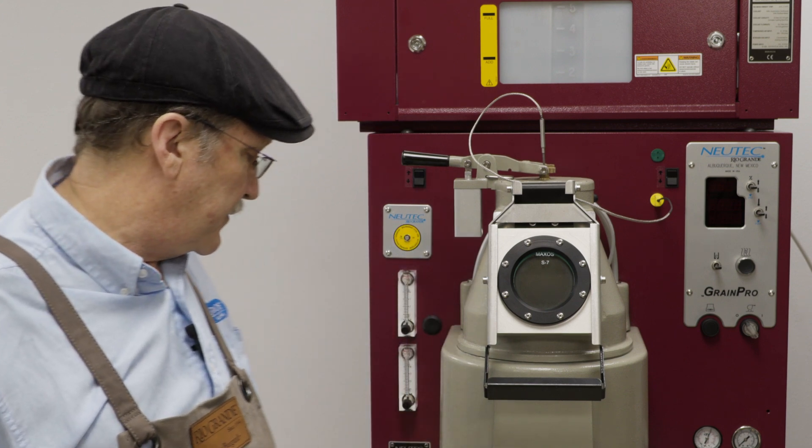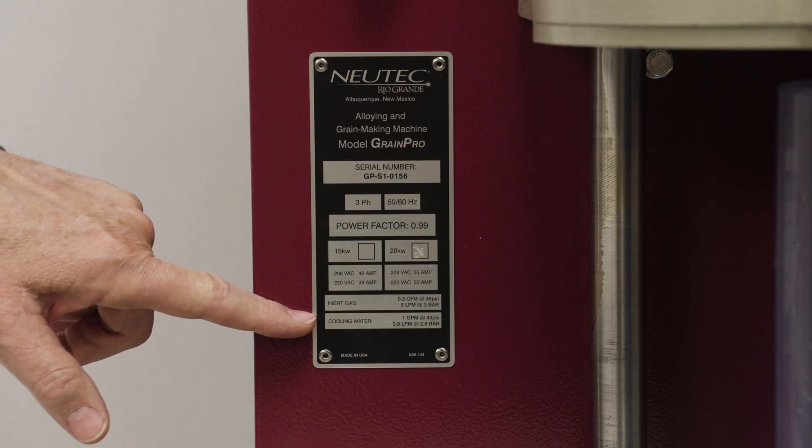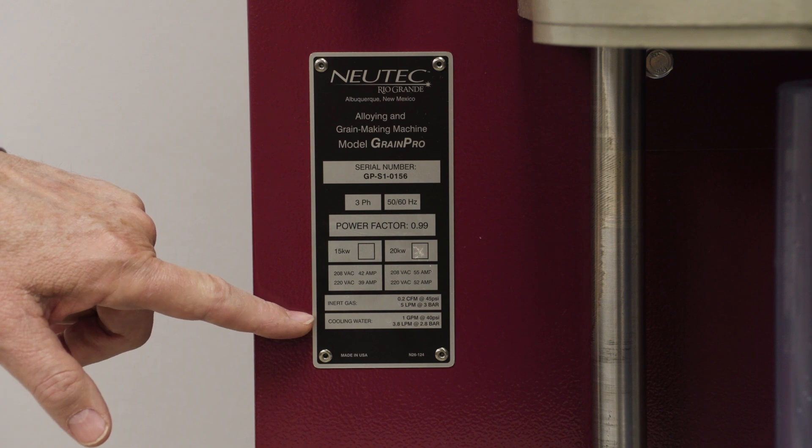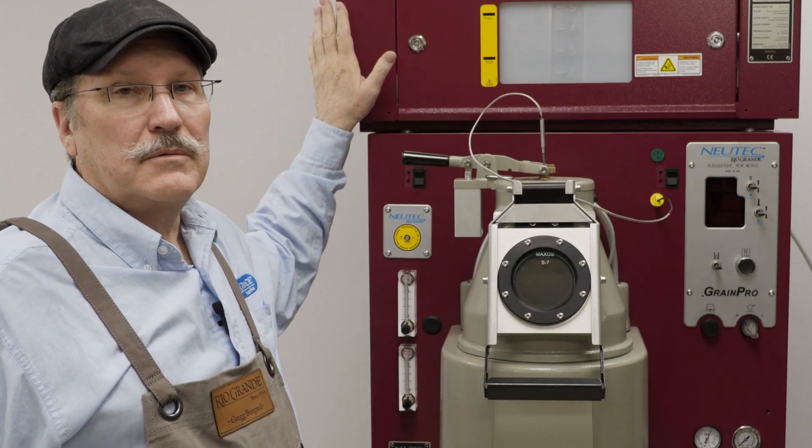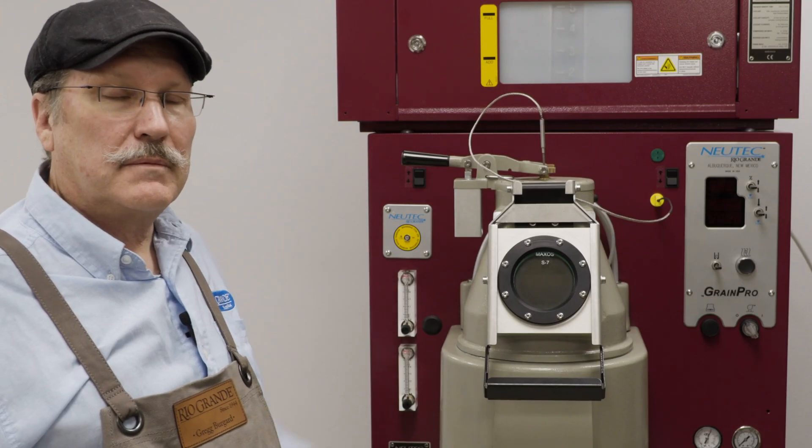Before we get started on the site requirements, you're going to need 208 to 240 volts. You're going to need a water source with a flow rate of one gallon per minute. In our case, we're using the Rio RC10, which is a closed loop cooling system. And finally, you're going to need either nitrogen or argon cover gas with an approximate pressure of about 60 PSI.